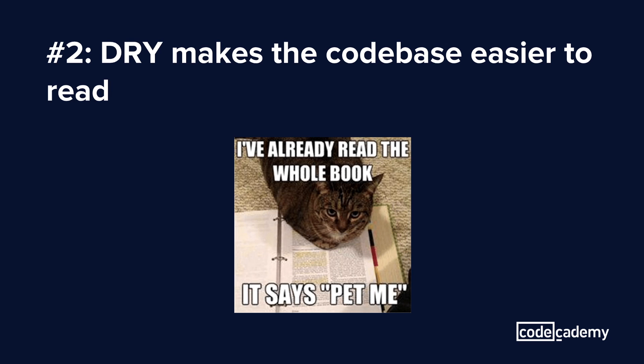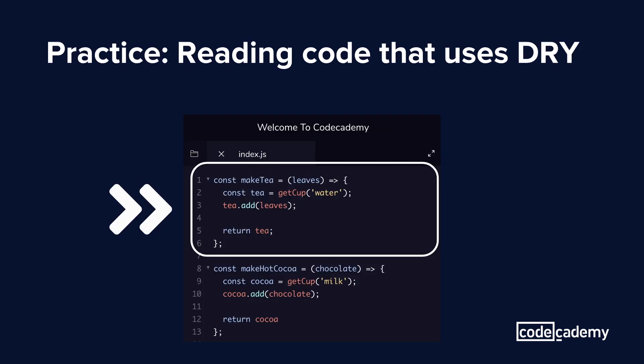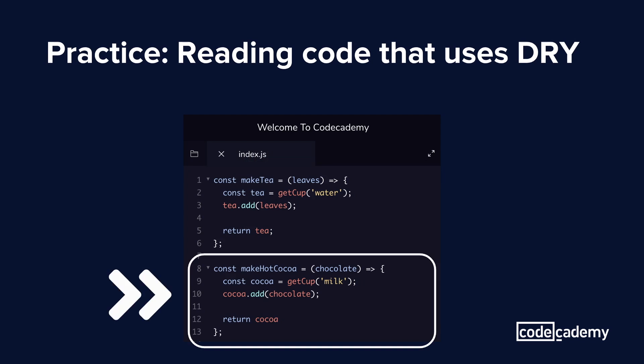DRY can also make the code base easier to read, because the layers of abstraction simplify what the code is trying to do. For example, looking at the first function here, I can see that it makes tea — it makes tea by getting a cup of water and adding leaves. The getCup and add functions are added layers of abstraction that hide away how the cup is retrieved and how the leaves are added, so we can focus on the end result. Using our DRY-compliant functions, I can also make hotCoco in the second function, and I already know what those functions do without seeing their implementation.